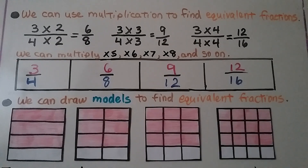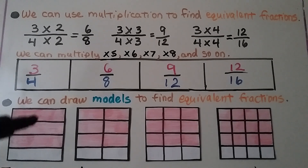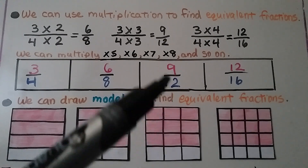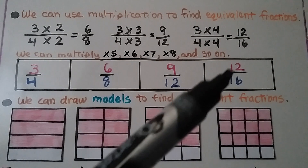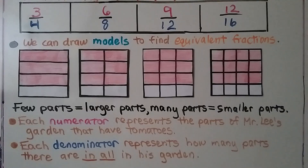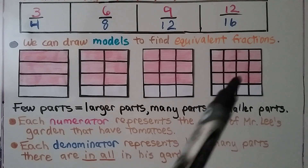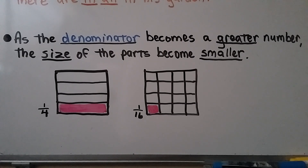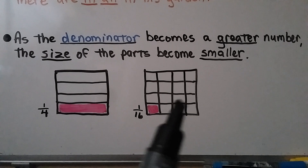We can also draw models to find equivalent fractions. Here we have three-fourths: four parts in all — that's the denominator — and three are shaded — that's the numerator. Now we have eight parts in all and six are shaded. Now twelve parts in all and nine are shaded. Now sixteen parts in all and twelve are shaded. As the denominator becomes a greater number, the size of the parts becomes smaller.